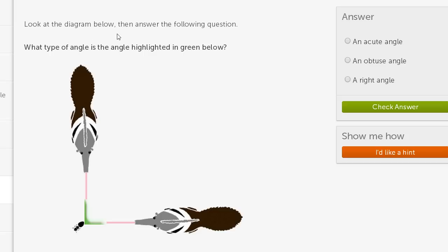Look at the diagram below. Then answer the following question. What type of angle is the angle highlighted in green below? So it looks like two anteaters going after an ant right over here. And this anteater is going straight down, or at least on my screen it looks like it's going straight down. And this anteater is going straight to the left.